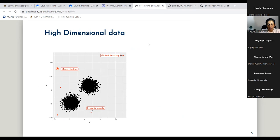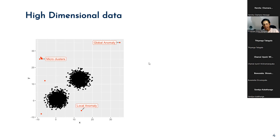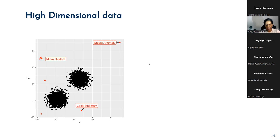According to past literature, we can divide the anomaly detection problem into two categories: anomaly detection for high-dimensional data, and for temporal data. In high-dimensional data — even visualized in 2D here — we can identify three types of anomalies. Global anomalies are data points far away from the entire dataset, with a significant gap. Local anomalies are anomalies with respect to neighboring points only. And microclusters are small anomalous clusters far away from the majority of the entire dataset.